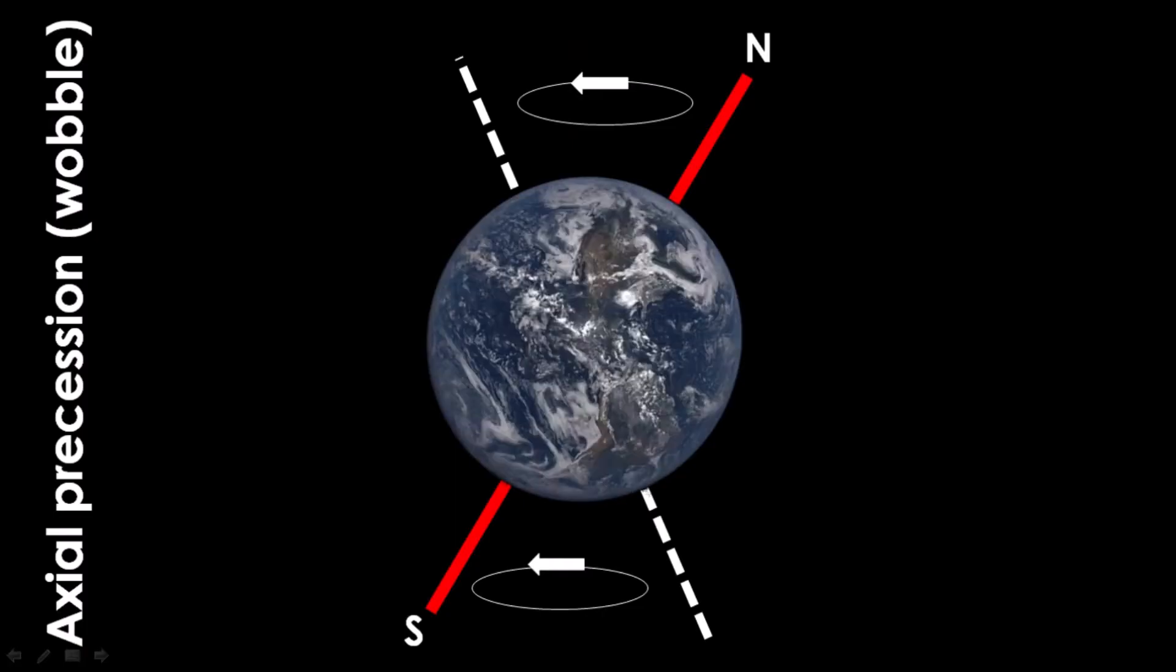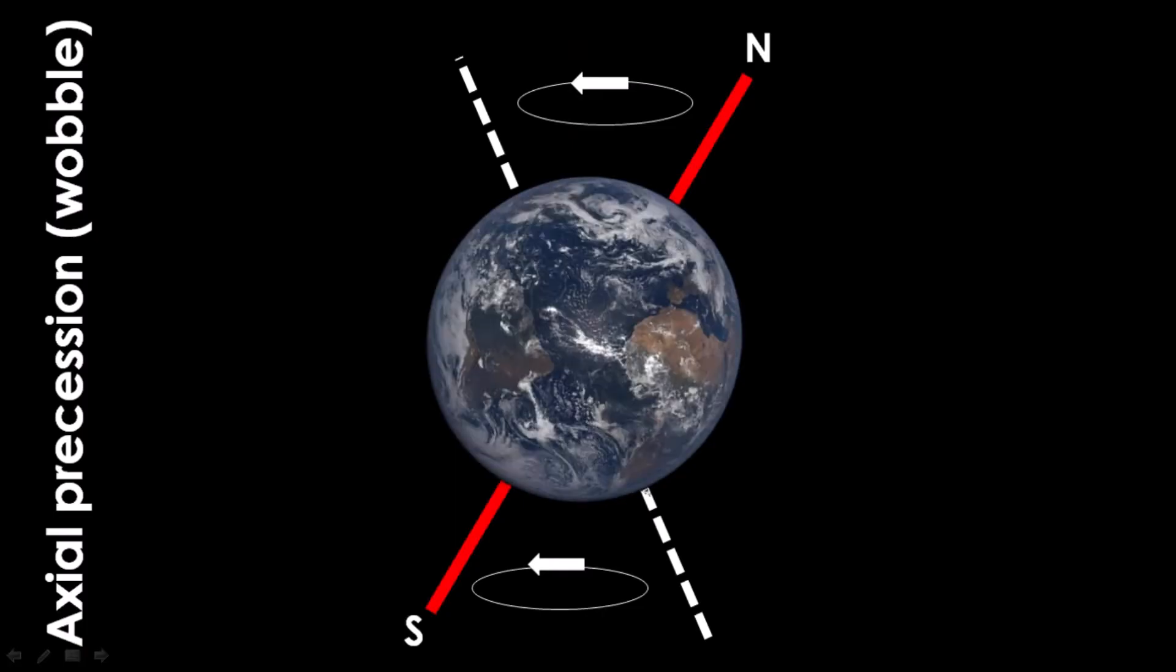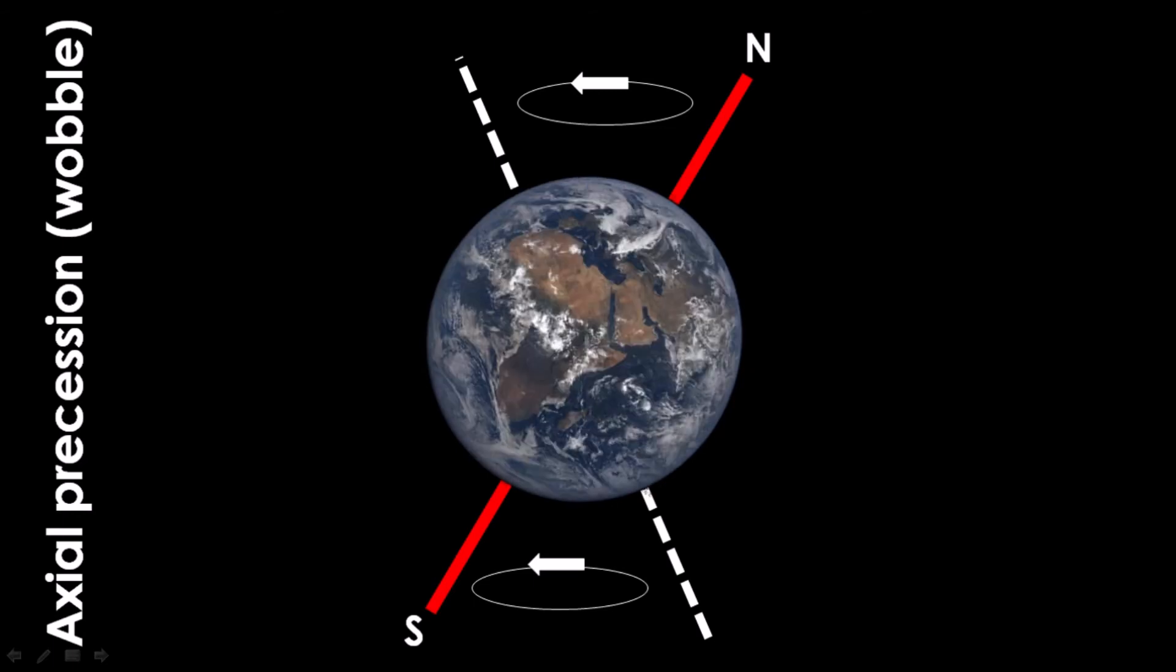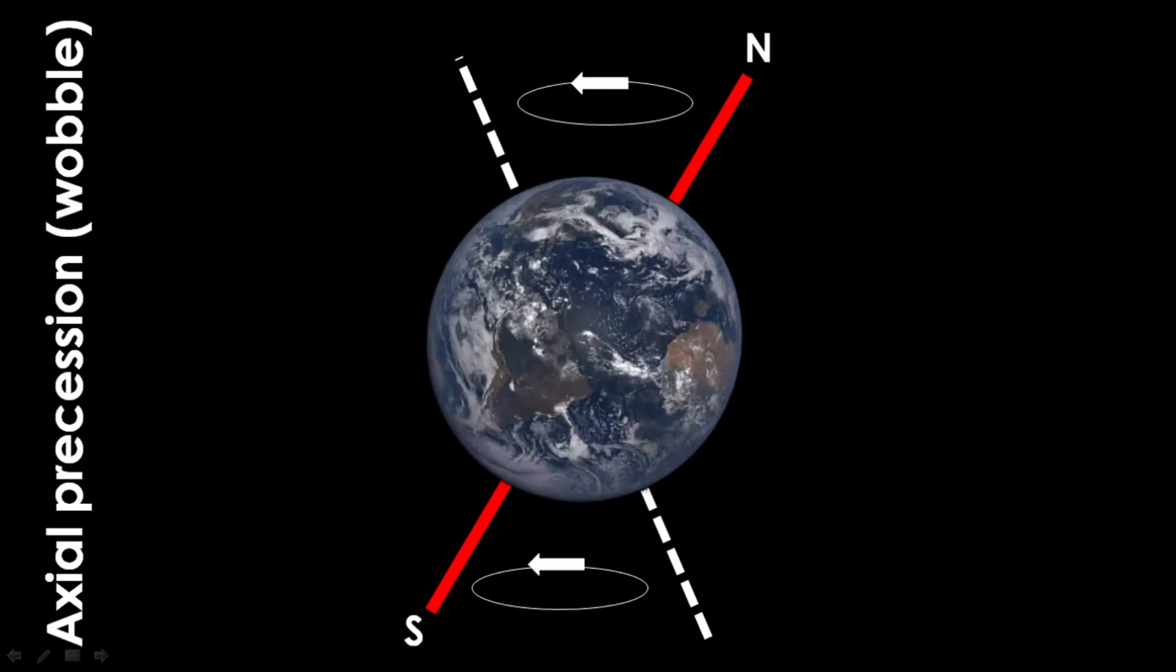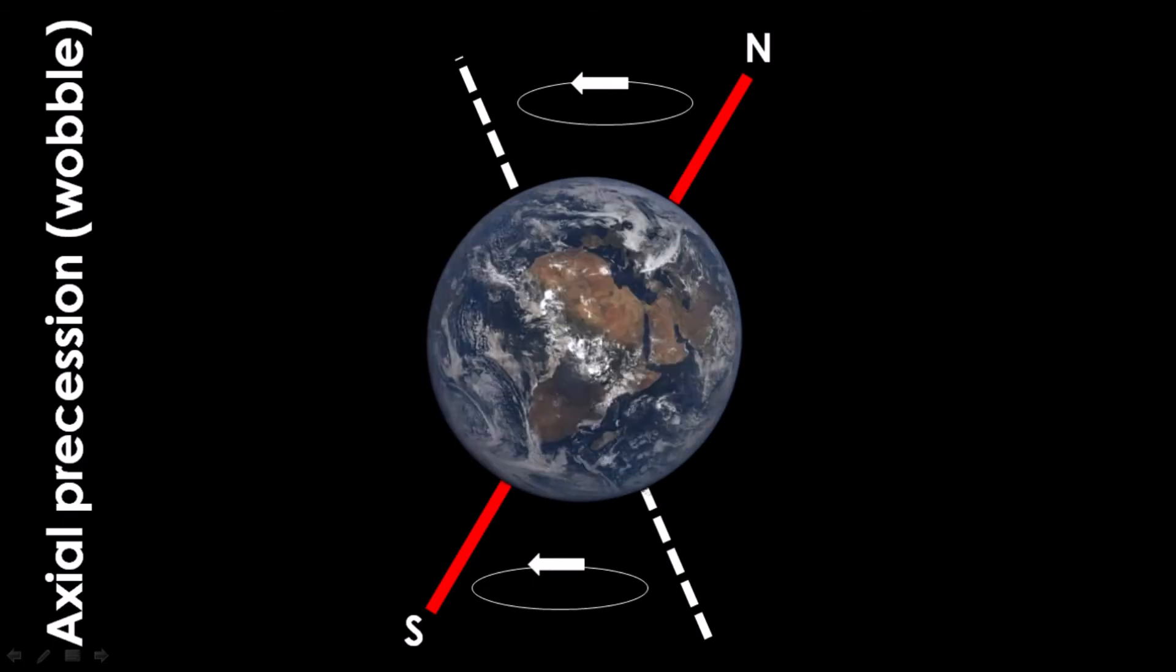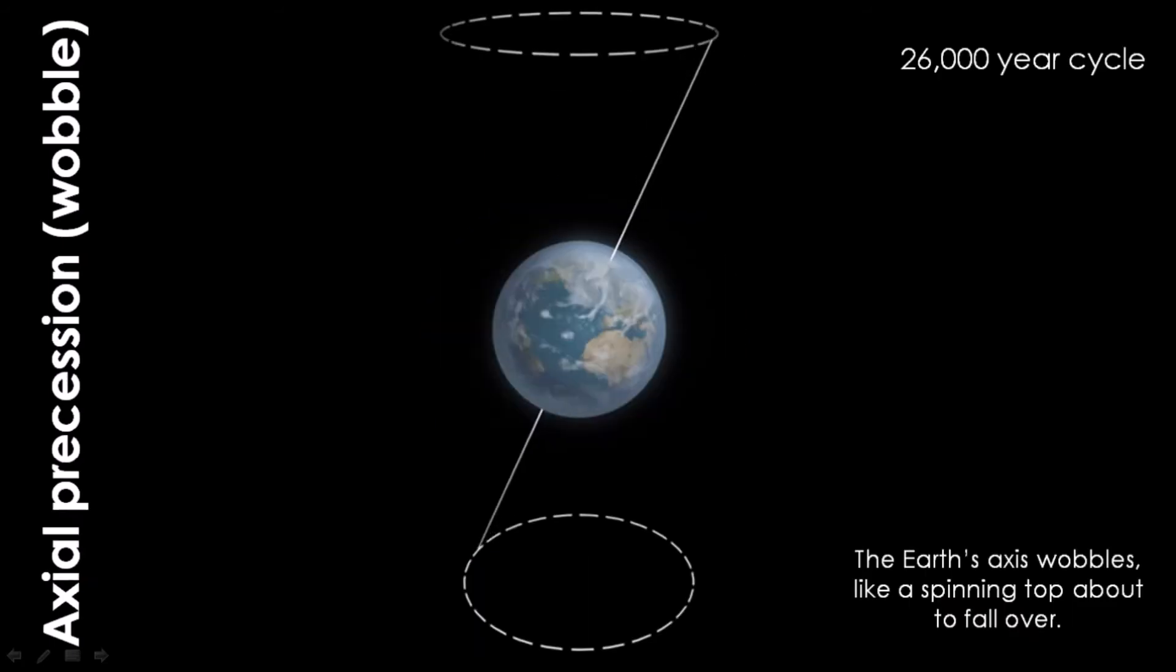The third and final concept in the Milankovitch theory is known as precession. As the Earth rotates, it actually wobbles slightly on its axis, like a slightly off-center spinning toy.